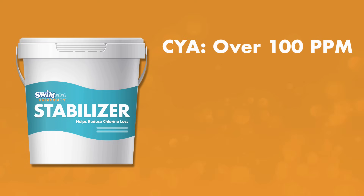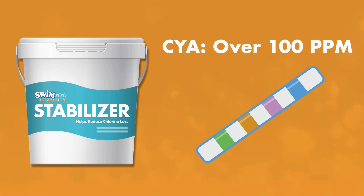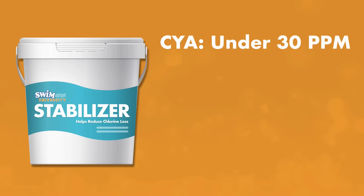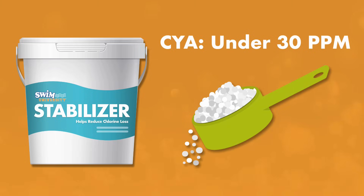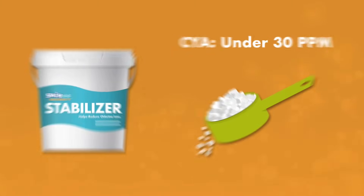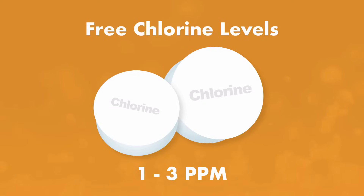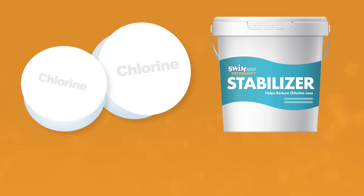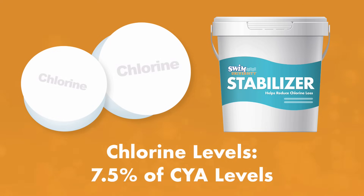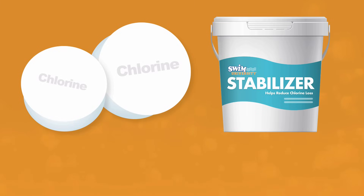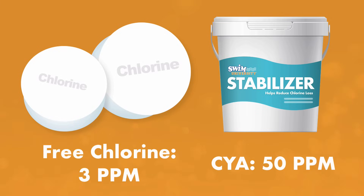If your levels climb above 100 parts per million, you may not be able to even read that exact amount on a test strip. You'll want to take that sample into your local pool supply store for more accurate testing. If your cyanuric acid is low — between 0 and 30 parts per million — you'll need to add some to your pool. You'll also want to know your free chlorine levels, which should be between 1 and 3 parts per million. When using cyanuric acid, aim to keep your chlorine levels at about 7.5% of cyanuric acid levels. That means if your pool has 50 parts per million of cyanuric acid, you'll need to keep free chlorine at 3 parts per million to effectively sanitize your water and prevent issues like algae.